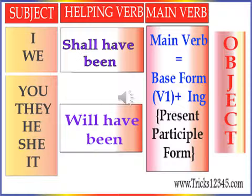For an assertive sentence, the structure is: subject plus will or shall plus have been plus first form of the verb plus -ing plus object. For a negative sentence: subject plus will or shall plus have plus not plus been plus first form of the verb plus -ing plus object. For an interrogative sentence: will or shall plus subject plus have plus been plus first form of the verb plus -ing. For an interrogative negative sentence: will or shall plus subject plus have plus not plus been plus first form of the verb plus -ing plus object.